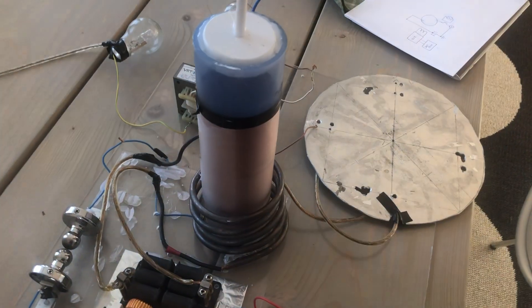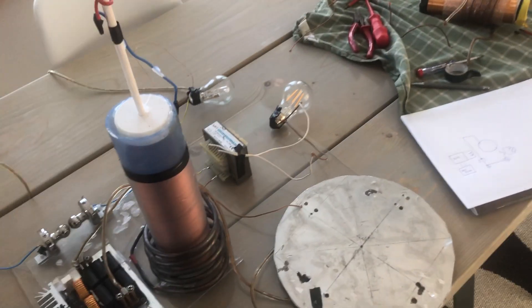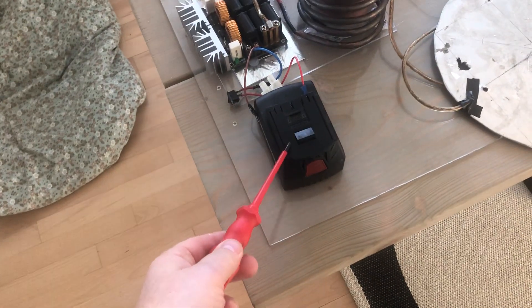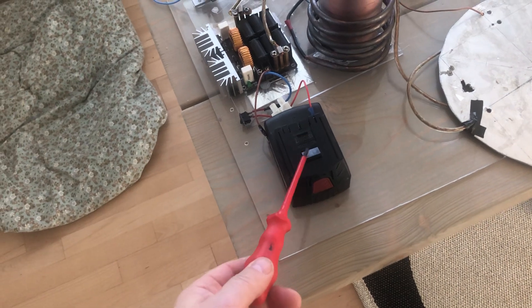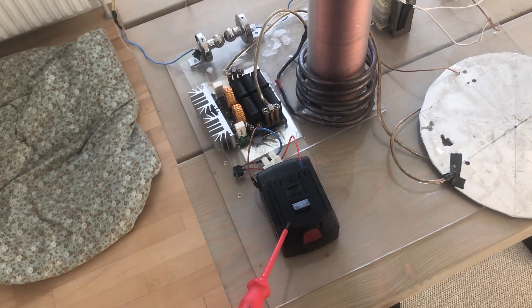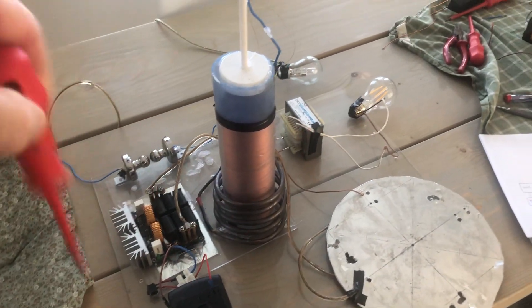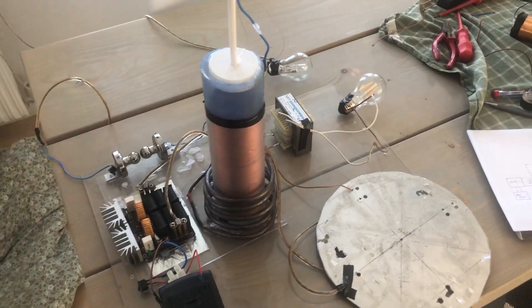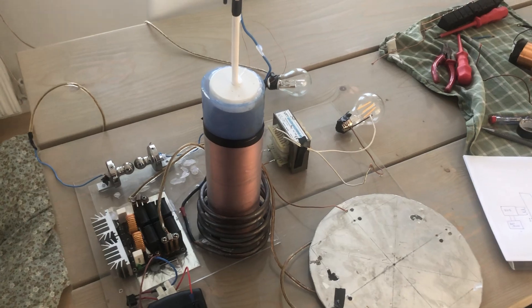If you understand the flow from that, that should allow rectification to a battery. So it should give a constant loop system. Stay posted.